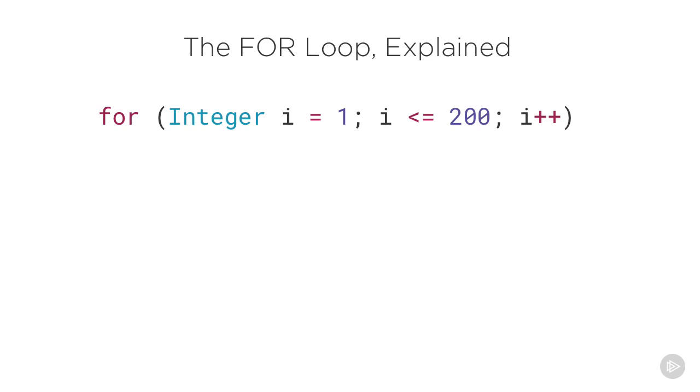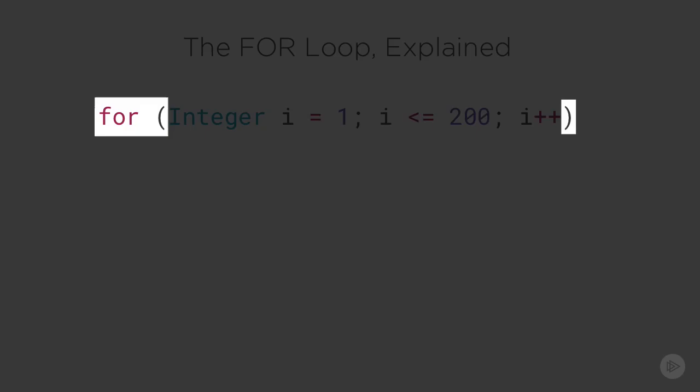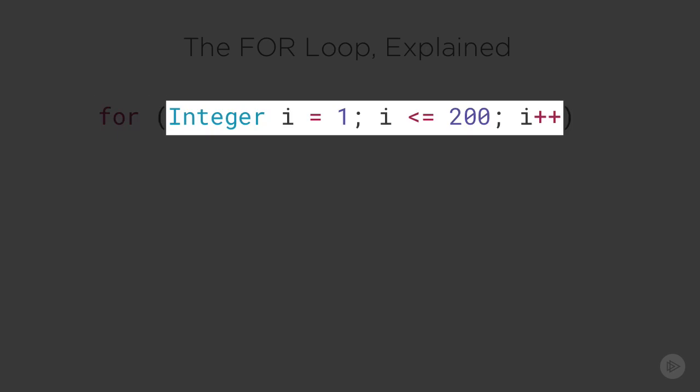Here's how that works. Of course, you start with the for keyword and open and close parentheses. Inside the parentheses, there are three sections separated by semicolons.